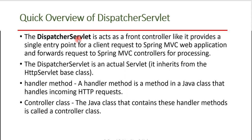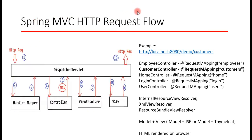DispatcherServlet is responsible for pre-processing and post-processing the request. All incoming requests come to the DispatcherServlet, and it forwards the request to the Spring MVC controllers for processing. Step by step: when we hit a URL in a browser, the request first comes to the DispatcherServlet — that is the first step. Since the application may have many controllers like EmployeeController, CustomerController, HomeController, and LoginController, the DispatcherServlet doesn't know which one should process the request, so it asks the HandlerMapper — that is the second step.